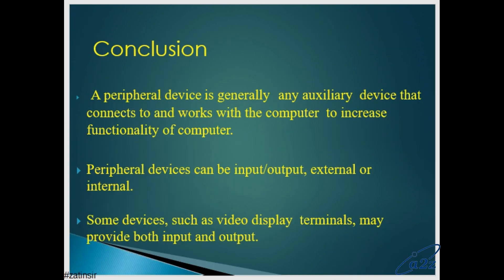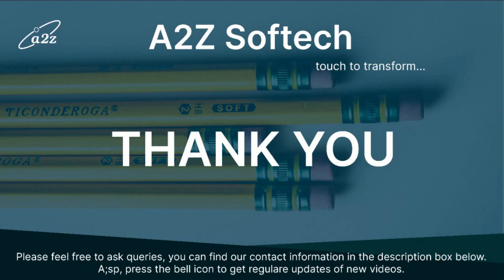Now conclusion is: peripheral devices kya hai? Auxiliary devices that work with the computer to increase the functionality of computer. Peripheral devices can be input, output, external, or internal. Some devices such as video display terminals may provide both input and output. Like HDMI, OTG, these devices provide input or output both. This is all for today. Thank you very much for your patience listening. Please feel free to ask for queries. You can find our contact information in the description box just below the video. Thank you once again, have a nice day.